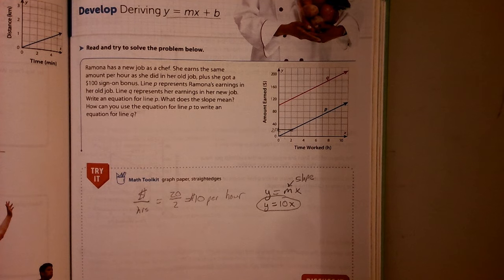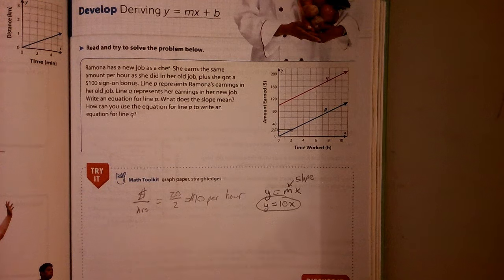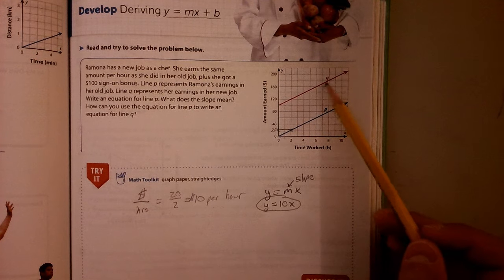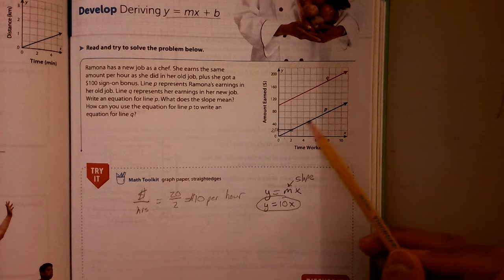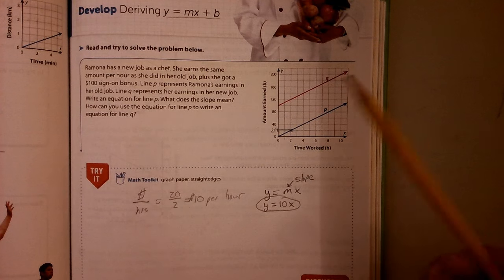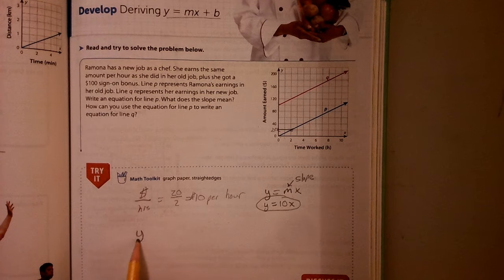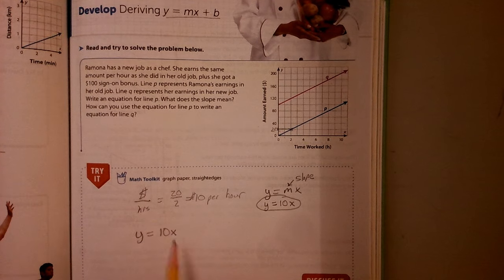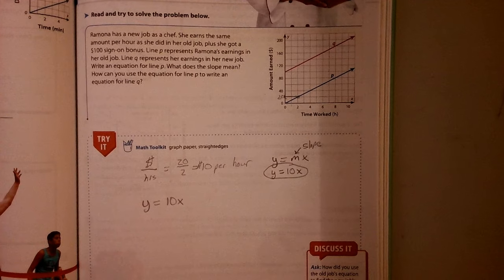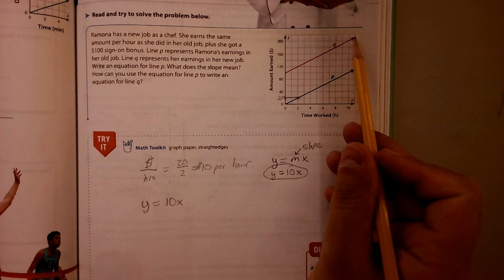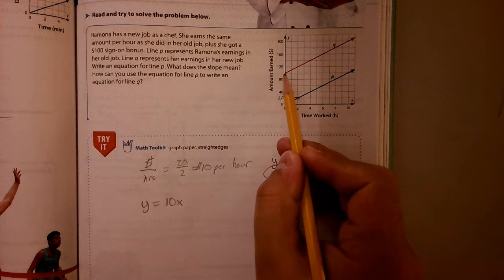So now how can we use that equation to write a new equation for line Q? Well, you'll notice just by looking at them that P and Q go up by the same amount. They look like they have the same slope. And that makes sense because it says she makes the same amount per hour. So I would say, let's just start with Y equals 10X.